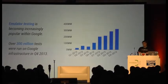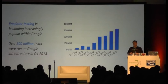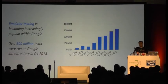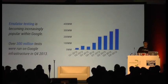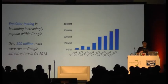But if you look at how Google teams test internally, you'll notice that emulator testing is becoming increasingly popular. Looking at a chart of actual test runs on Google infrastructure on emulators from 2012 to 2013, in Q4 we ran over 300 million tests. You can see the growth — our engineers are using emulator testing more and more.